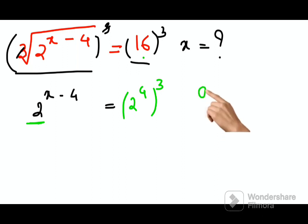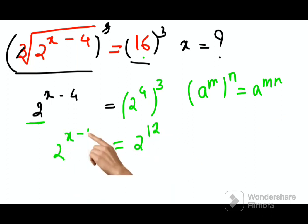Now we have a raised to m the whole raised to n, that is nothing but a raised to m into n. So this becomes 2 raised to 12. You still have 2 raised to x minus 4, but now if you look closely, your bases are same, so therefore I can directly equate the indices.